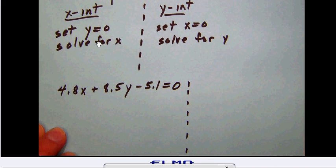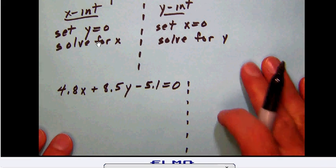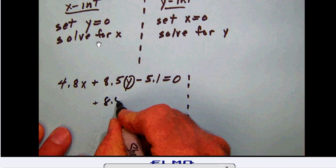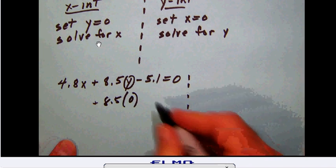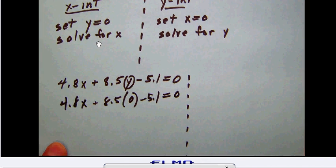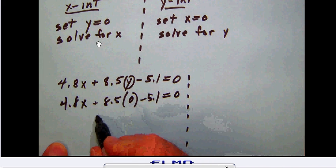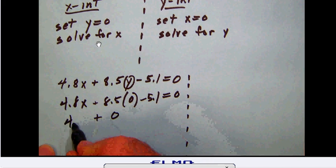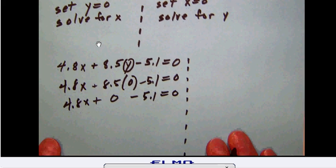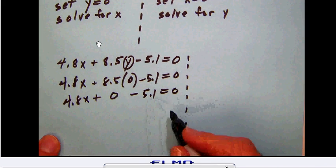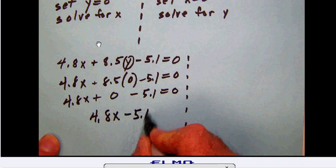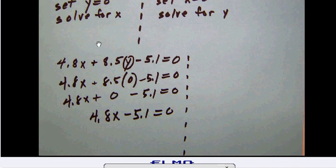So on our equation below here, we're going to set this y equal to zero, so that's going to be 8.5 times zero. Let's just recopy everything else just as we did before. Now 8.5 times zero is zero, so let's recopy everything as before. Now the 4.8x plus zero minus 5.1 is simply going to be 4.8x minus 5.1 equals zero.